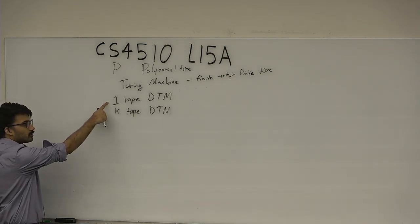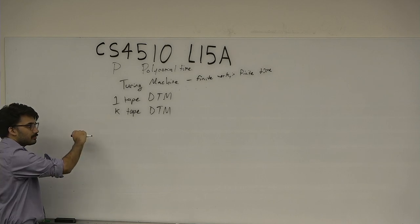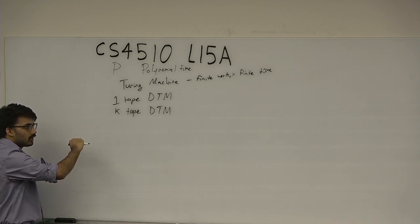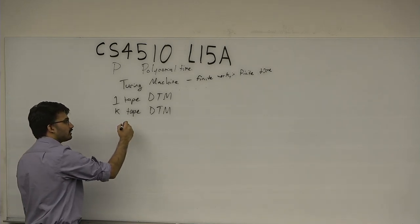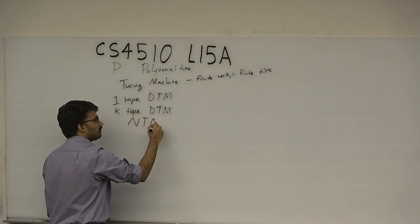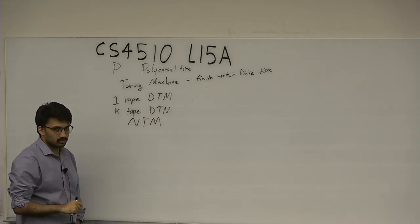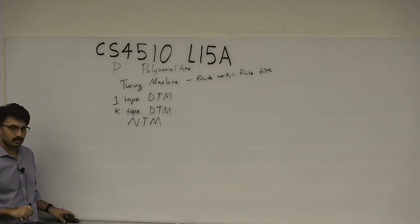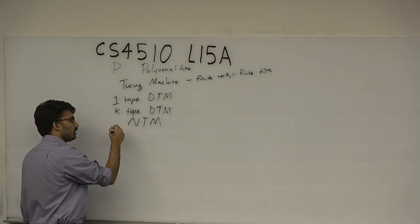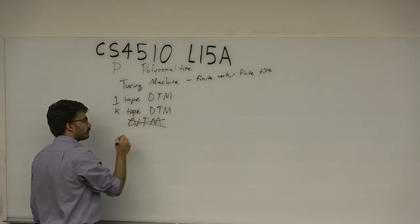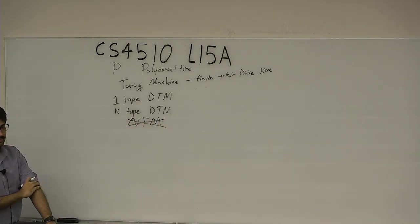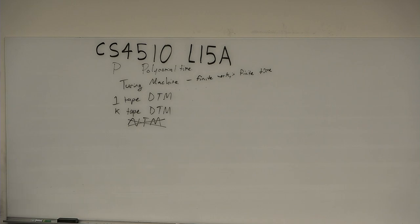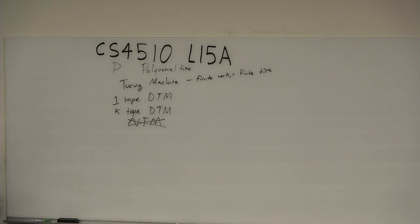We talked about a one-tape deterministic Turing machine, a K-tape deterministic Turing machine, and a non-deterministic Turing machine — this last one is not really real, it has the magic superpower of non-determinism. We agree non-determinism is not physically realizable. We'll think about that one when we define NP in the second half of today's lecture. Today we're defining P.